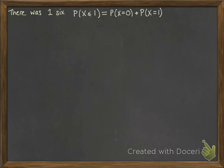We had 1 six. So, the probability that X is less than or equal to 1 would be as follows.